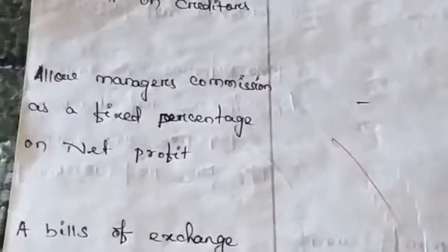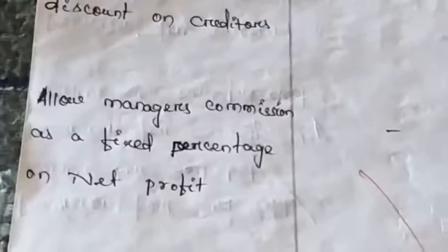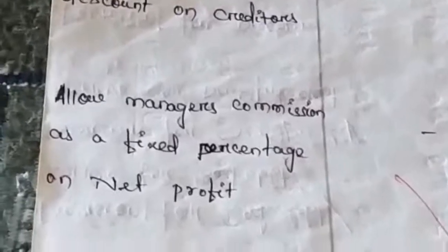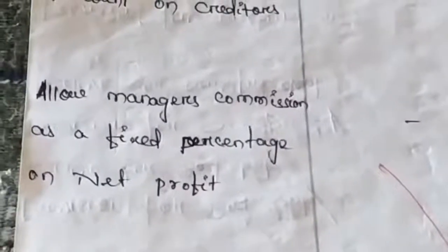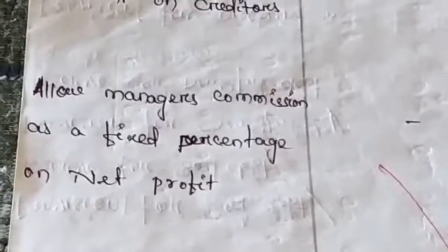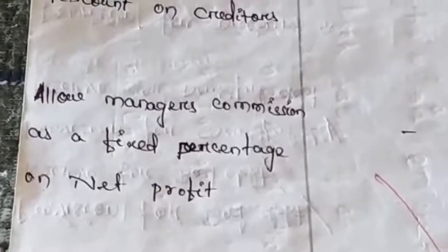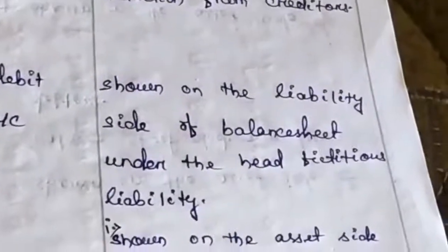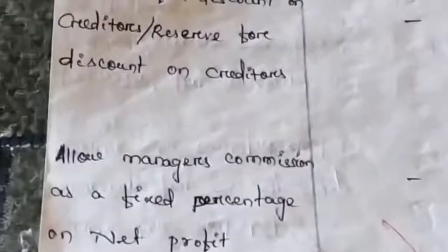Next adjustment is manager's commission as a fixed percentage on net profit. After calculating net profit, you calculate the manager's commission upon that net profit. It is an expense that is not yet paid but is payable, so it is shown on the debit side of the profit and loss account. Being an outstanding expense, it is shown on the liability side of the balance sheet under the head fictitious liability.